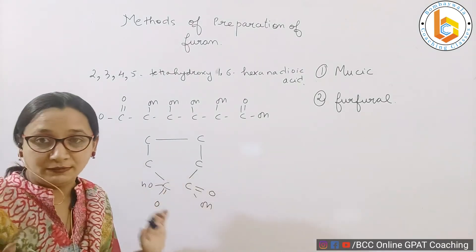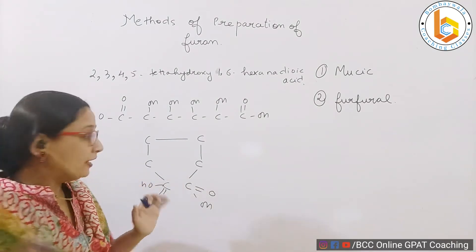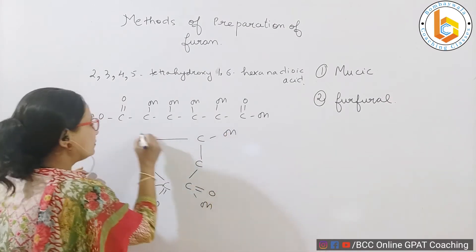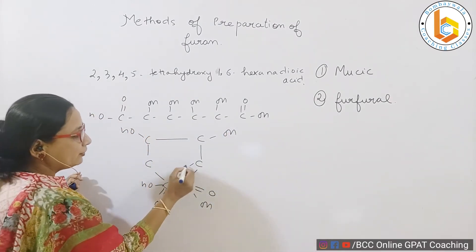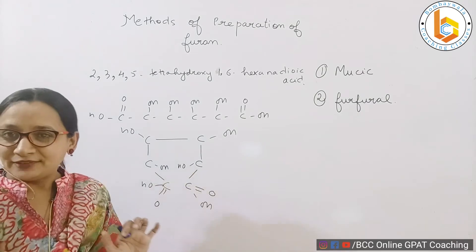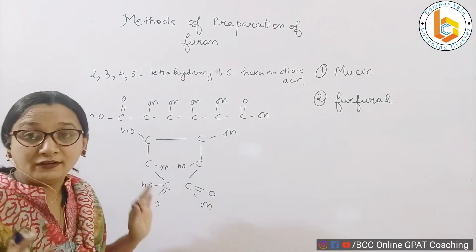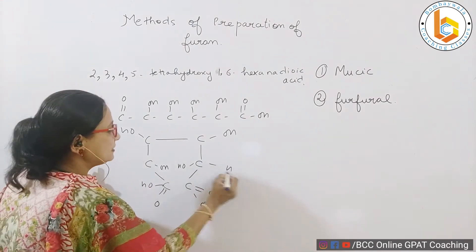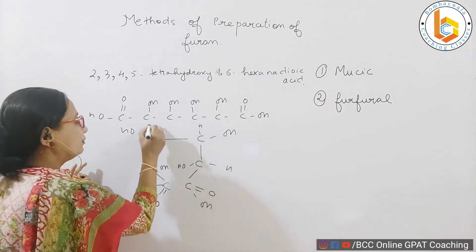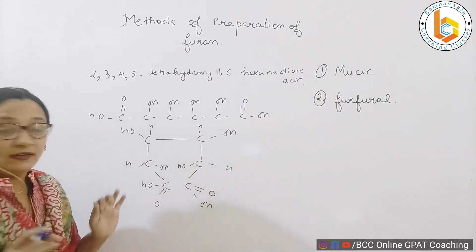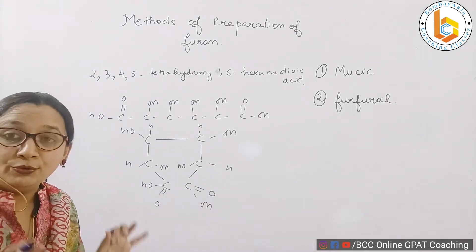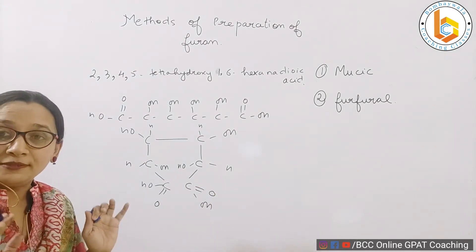Two hydroxy groups are outside and I write two hydroxy groups inside. Two, three, four, five tetrahydroxy. Remaining valencies I fulfill with hydrogens. So I have nothing but the structure of mucic acid. Now what happens here?